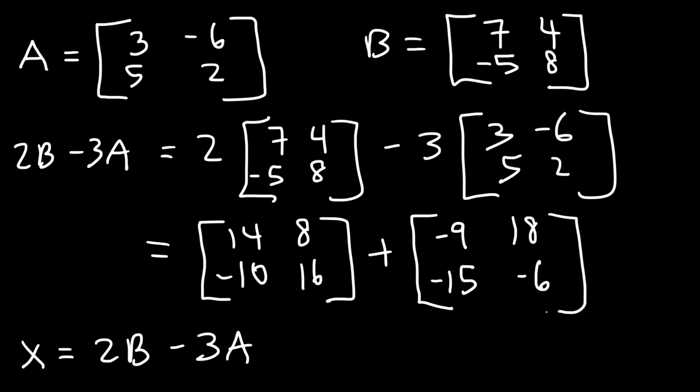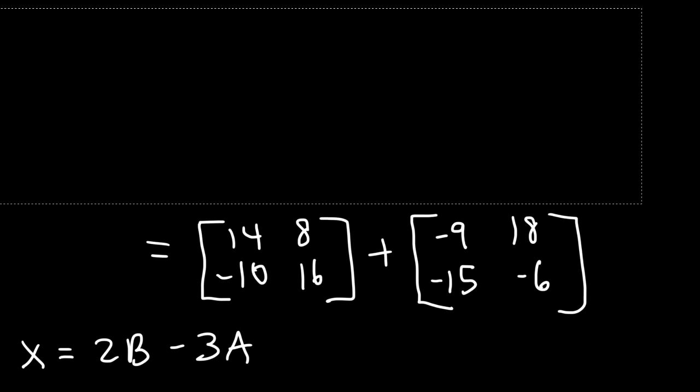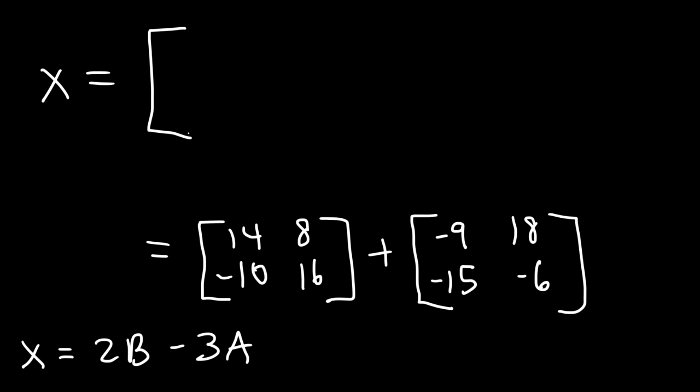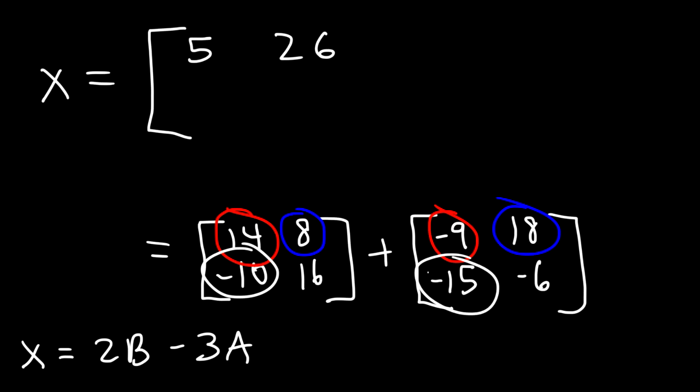So now all I need to do is add these two matrices. So matrix X is going to have the following values. First, let's add 14 and -9, which is the same as 14 minus 9, so that's going to be 5. Then we have 8 plus 18, which is 26, and then -10 plus -15, that's -25.